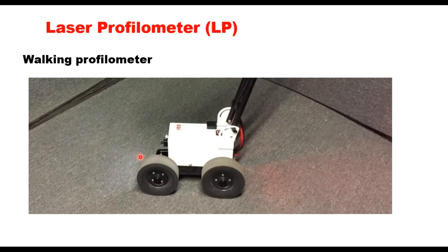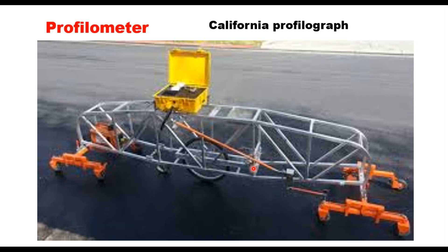A walking profilometer is an inclinometer-based system with high repeatability. The walking platform gives the operator more control at a slower pace than a vehicle-mounted unit. In the case of a California profilograph, a 25-foot frame is assembled in three pieces on top of supporting wheels, with a sensing wheel mounted to allow free vertical movement at the center of the frame. The deviation against a reference plane is recorded on graph paper, detecting surface deviations up to about six meters in length.